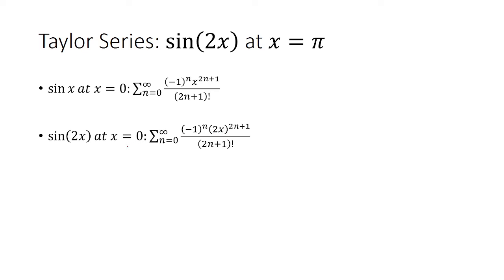Now we want to make this centered at x equals pi. So for that, you want to break up the 2 and then put a parenthesis around the x and we have x minus pi.